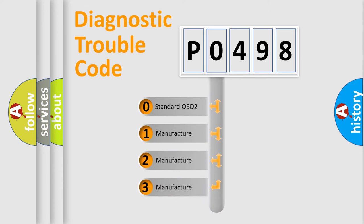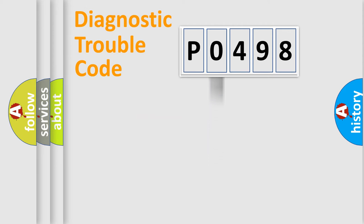If the second character is expressed as zero, it is a standardized error. In the case of numbers 1, 2, or 3, it is a more prestigious expression of the car-specific error.